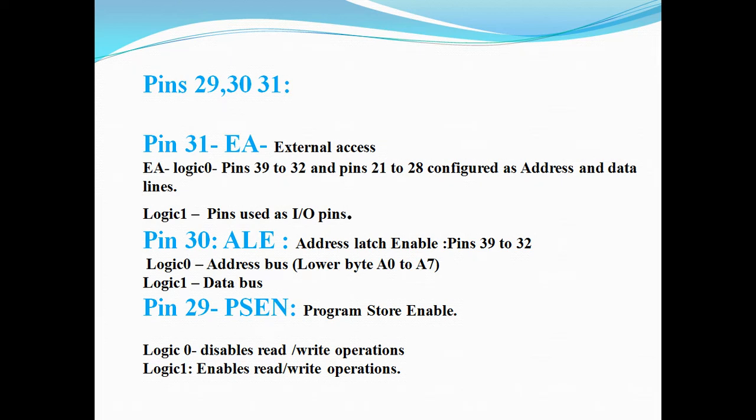Coming to pin 31, which is external access. This pin is active low actually. Active low means if you are configuring a 0, then you are looking for external access. If on-chip memories are not sufficient to you, you can extend your memories by using these three control lines with the help of address and data bus. If EA logic is 0, pins 39 to 32 and 21 to 28 functionality decided as address and data lines, not IOS. Suppose if EA logic is 1, then the pins used as input-output ports. That is active low. If you are looking for external access, make it logic 0. If not, you need to give it to logic 1 to use it as IOS.